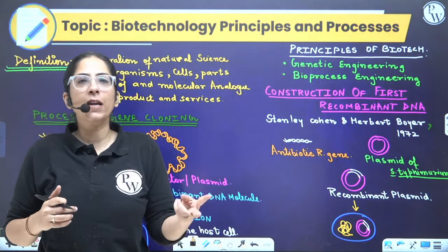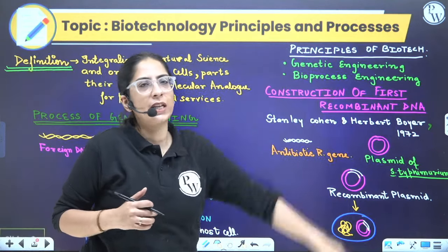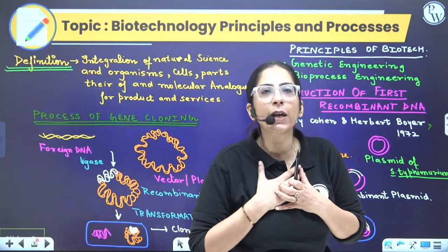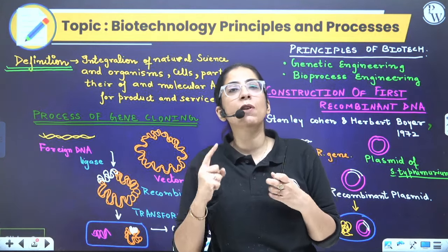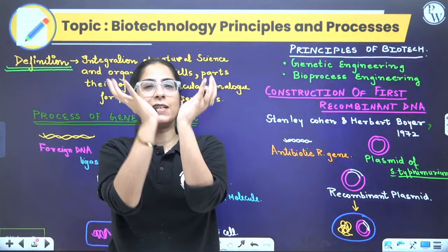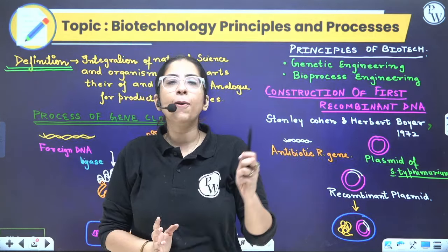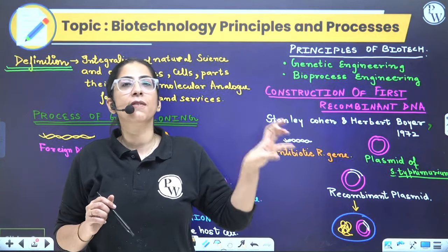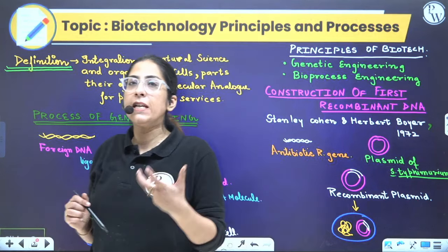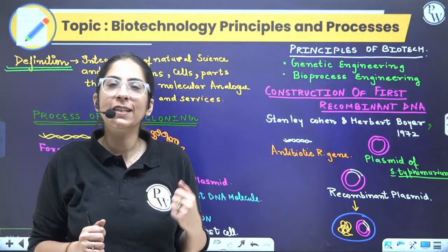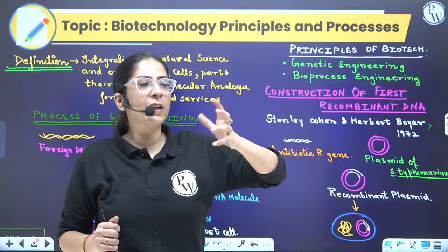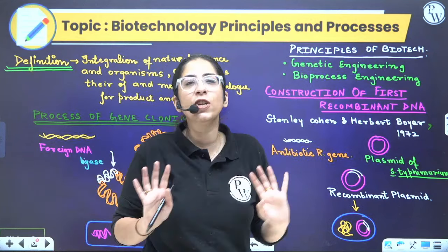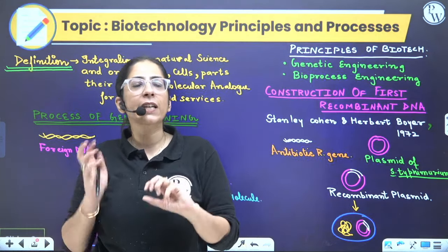The two main principles of Biotechnology are: first, genetic engineering. If I am using one organism and modifying it for my own need — for example, I have a cell and I want it to produce insulin, so I introduce an insulin gene into it — any modification related to the genotype, genes, addition or deletion, is termed genetic engineering. We are inserting or deleting genes — this is genetic engineering.